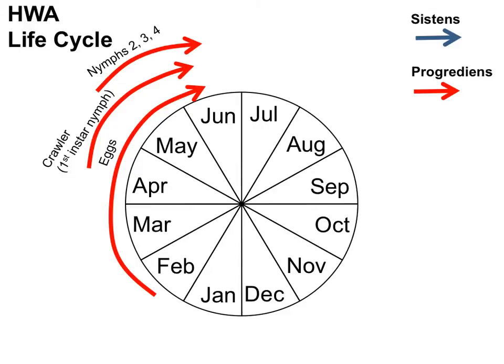After the crawler stage, the progrediens generation goes through three more nymph stages: the second, third, and fourth instar nymphs. Then by June, they develop into adult females. The adult progrediens females lay the eggs for the sistens generation in the summertime, June and July, also in a white woolly egg mass.